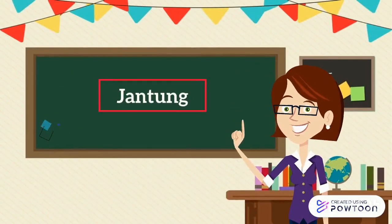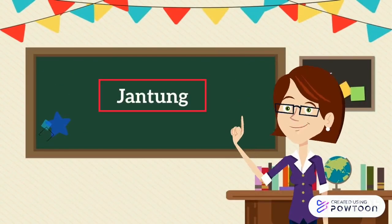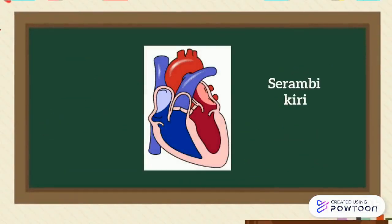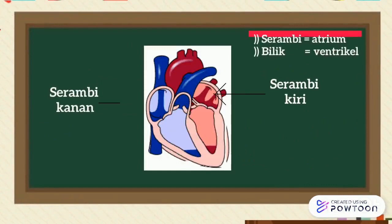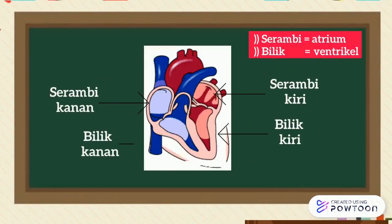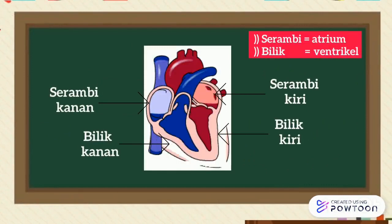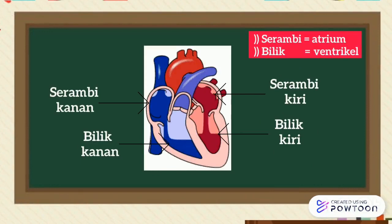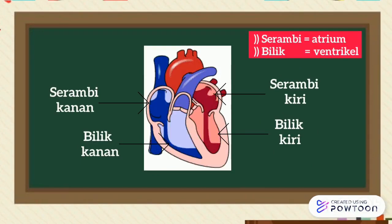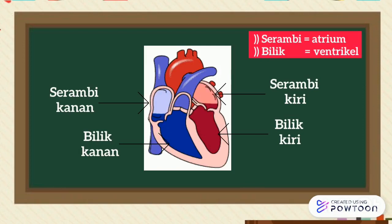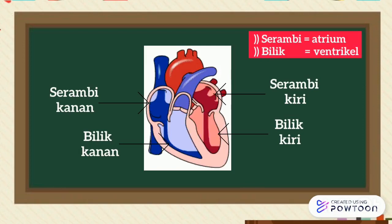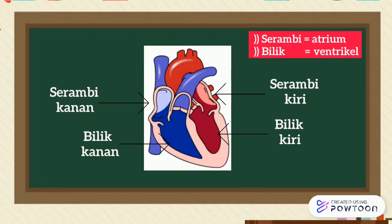Jantung terbagi atas empat ruang: serambi kiri, serambi kanan, bilik kiri, dan bilik kanan. Pada serambi kiri dan serambi kanan dipisahkan oleh septum intratrial. Sedangkan pada bilik kiri dan bilik kanan dipisahkan oleh septum intervertikular.